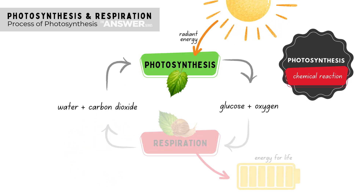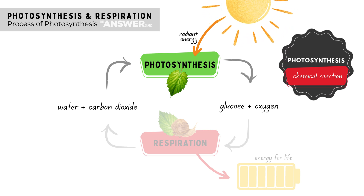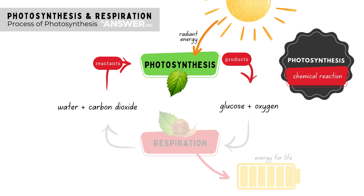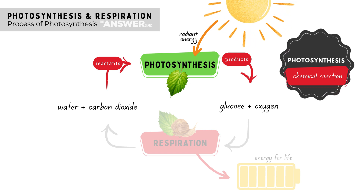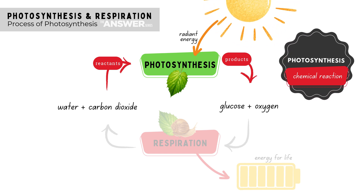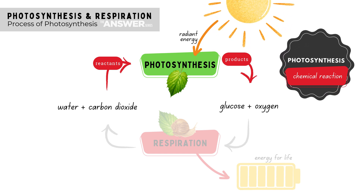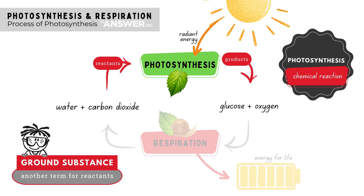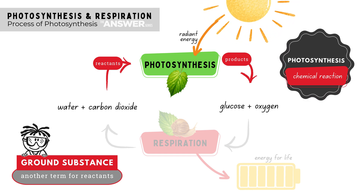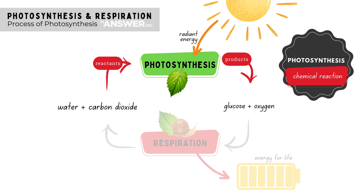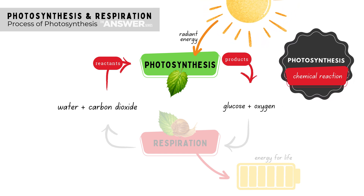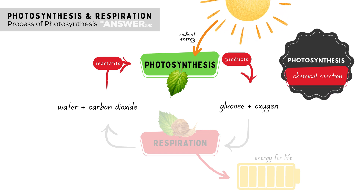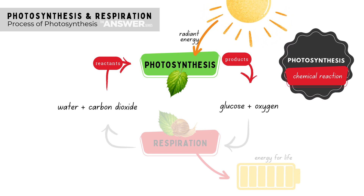As stated in the previous video, photosynthesis is a chemical reaction, so it requires certain reactants and produces certain products. Remember this flow diagram? From it we can see that for photosynthesis to take place, a plant needs two raw substances: water from the soil and carbon dioxide from the air. We can also see that photosynthesis produces two products: glucose, which can either be stored or used in the plant, and oxygen, which is released into the atmosphere. Radiant energy from the sun is also needed for photosynthesis.